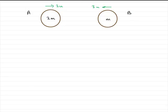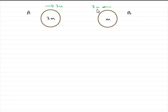Before we start this question, what we need to do is sketch a diagram. I've already started sketching the two particles, A and B, of masses 2m and m. We're told that A and B are moving towards one another before they collide. A is moving with a speed of 2u, and B is moving with a speed of 3u.